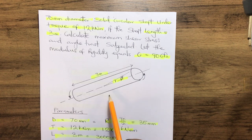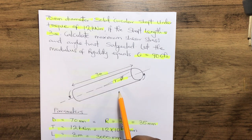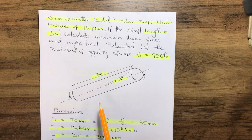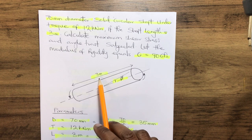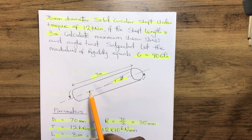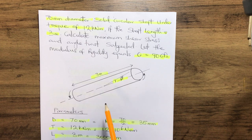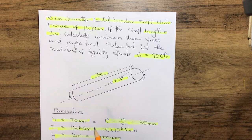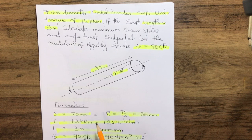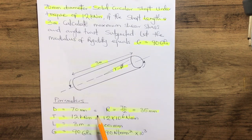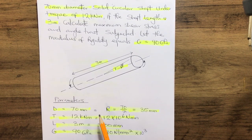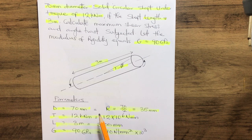Now using the reference diagram schematic shown, we have a length of 3 meters for a circular solid shaft subjected to a torque of 12 kilonewton meter, with a modulus of rigidity of 90 gigapascals.